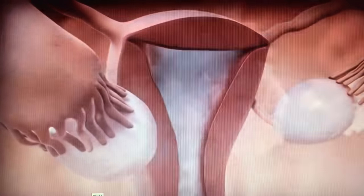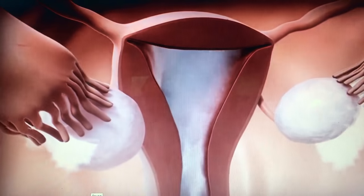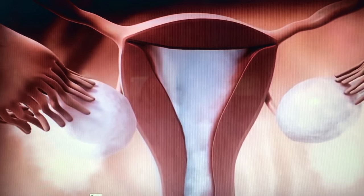If the tube is open, the dye gradually fills it. The dye spills into the pelvic cavity, where the body resorbs it.